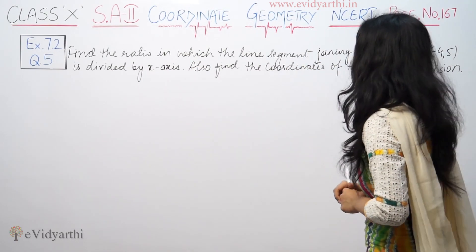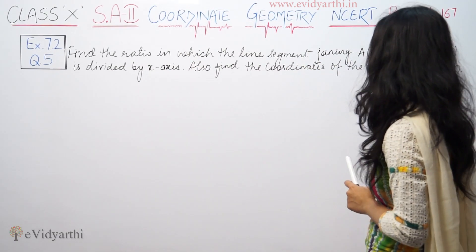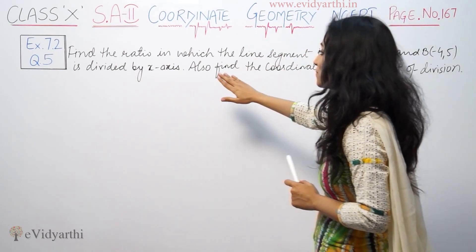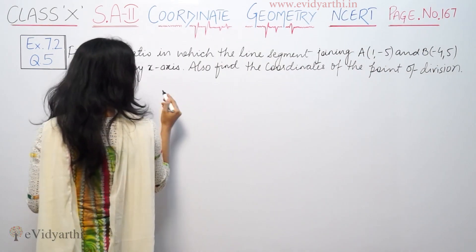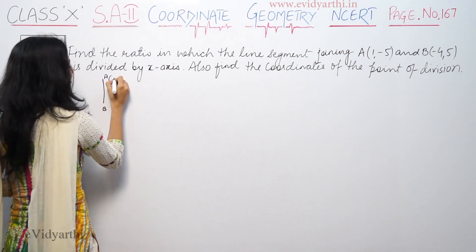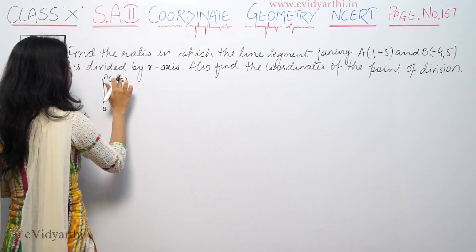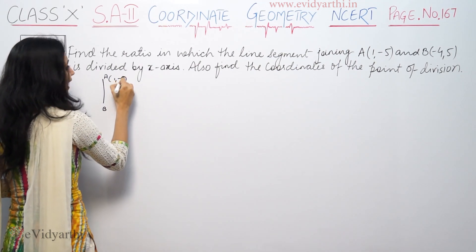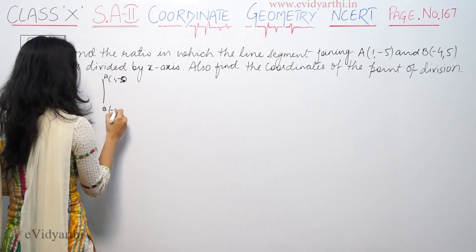This says find the ratio in which the line segment joining points A and B is divided by x-axis. The coordinates are: point A is (1, -5) and point B is (-4, 5).